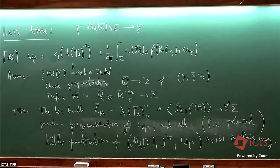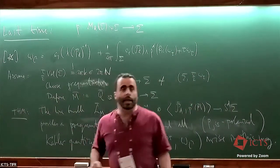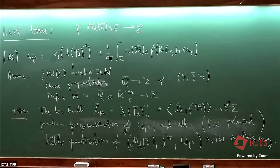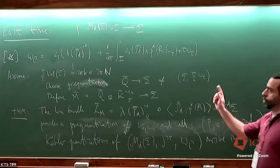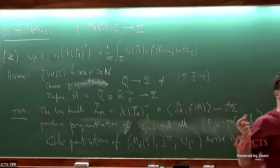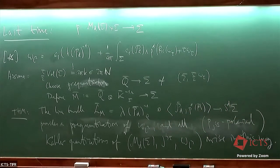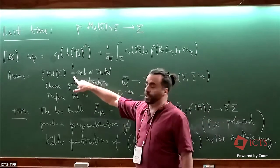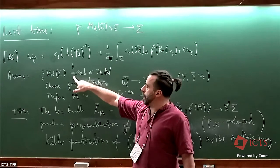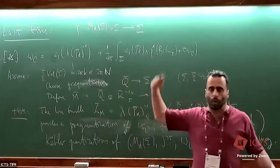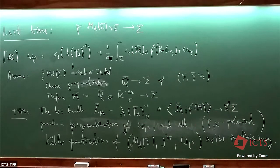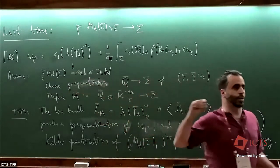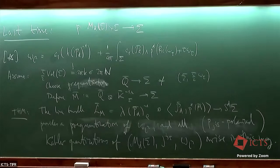This statement basically already answers the question of whether you can do geometric quantization, as I advertised. The result is: you start with a pre-quantization of basically just the area form on the surface, which is needed to write out the vortex equations. We choose a pre-quantization, so there is a quantization condition for the volume. Once this integrality condition on the symplectic form is satisfied, you can always construct a pre-quantization — or more, since you can tensor the pre-quantum line bundle by a flat bundle.